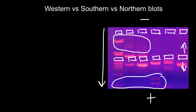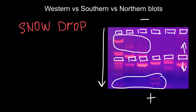Now for the mnemonic technique to memorize which name stands for which technique. All you have to remember is just two words: SNOW DROP. In the first word, each letter stands for one of the procedure names — S stands for Southern, N stands for Northern, and W stands for Western. We don't have anything for O — we can consider it like a zero, because there is no Eastern blot.